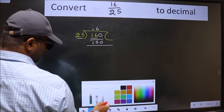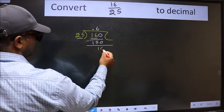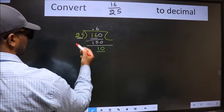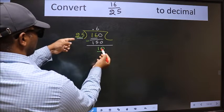Now we should subtract. We get 10. Now here we have 10 and here 25. 10 is smaller than 25.